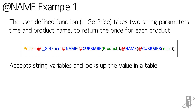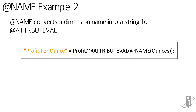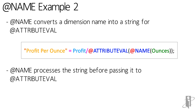Instead of referencing a member name directly, the NAME function returns a string as input to the user-defined function. For our second example, NAME is used to convert a dimension name into a string for the attribute value function. Here we have: Profit Per Ounce = Profit divided by the attribute value of Ounces. In this case, Ounces is a dimension name, and we want to pass its name — not the dimension member — into the attribute value function. So the NAME function processes the string Ounces before passing it to the attribute value function.